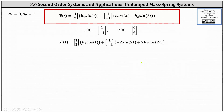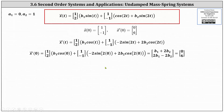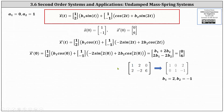We now substitute zero for T into x prime of T and set it equal to the vector [0, 6]. Simplifying the sines and cosines, we get the two-by-one matrix with entries B one plus two B two and two B one minus two B two, which equals [0, 6]. Solving this system using an augmented matrix in reduced row echelon form gives B one equals two and B two equals negative one.